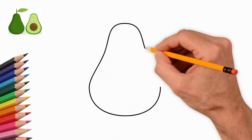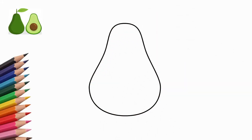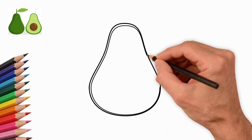How to Draw an Avocado. First we draw two ovals, small and large, connected to each other.